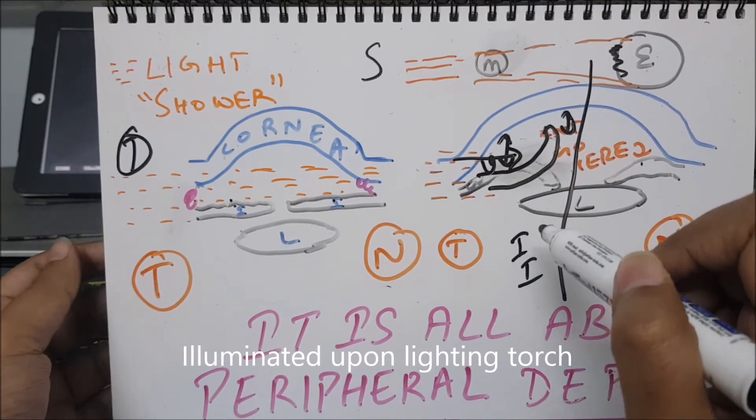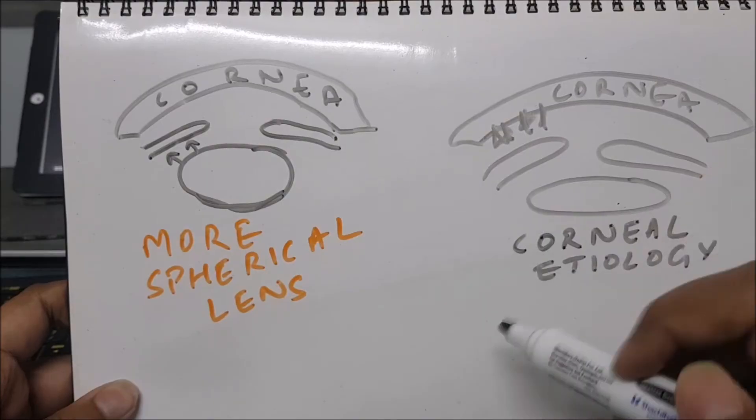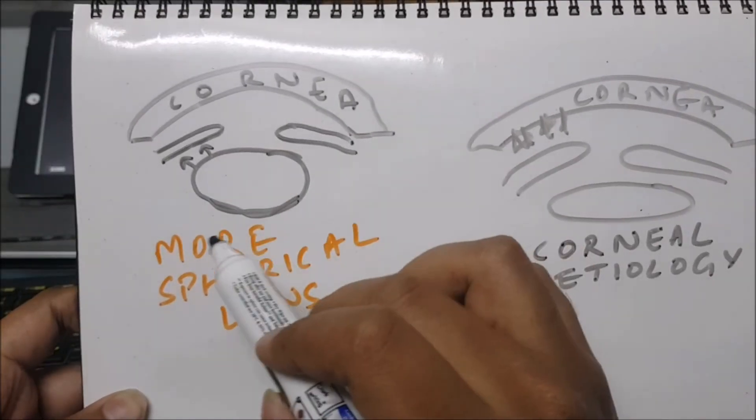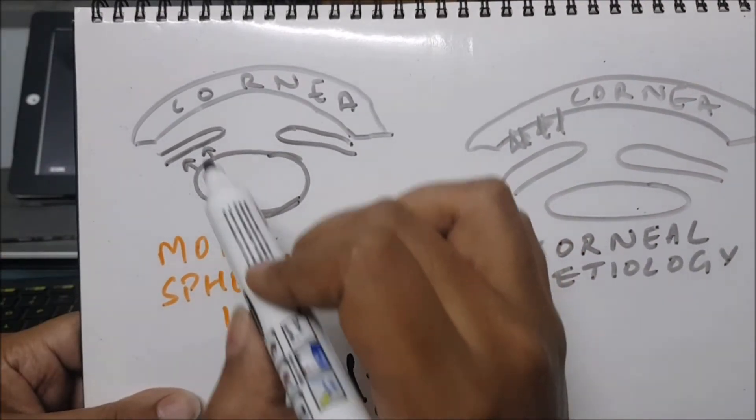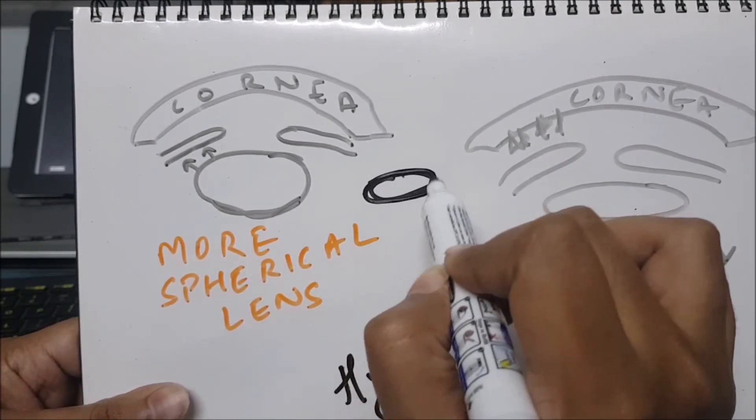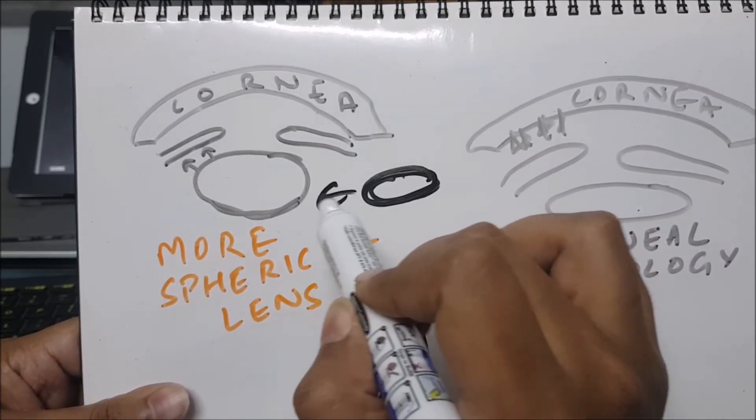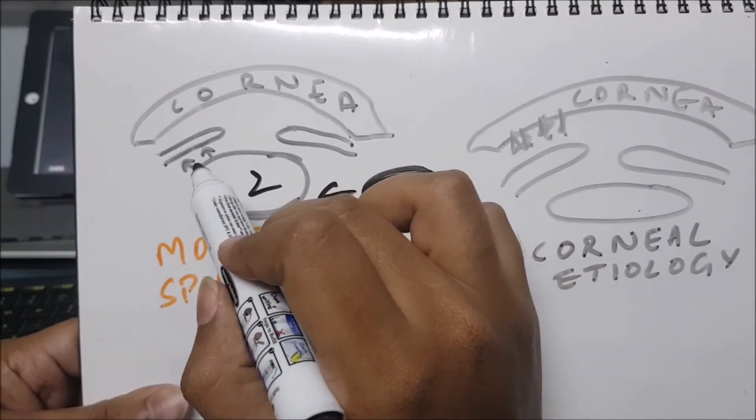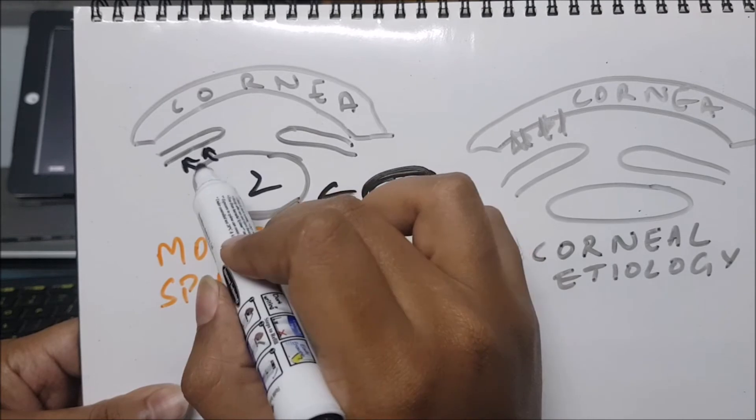Let us see more pathologies. In hypermetropia, there is a more spherical lens. What happens if the lens becomes larger, from this size to this size? It will definitely obstruct - it will push the iris forward.